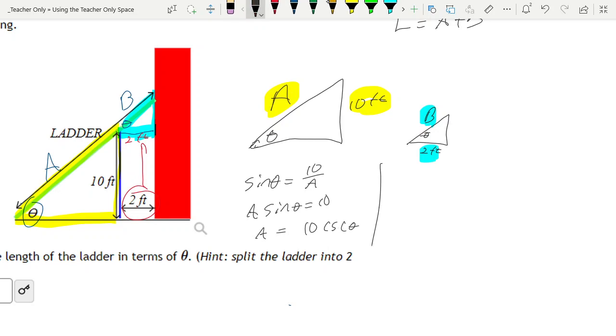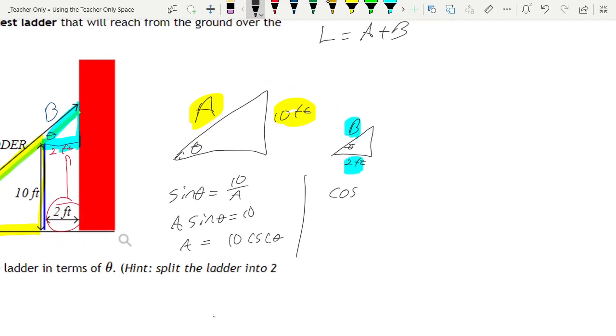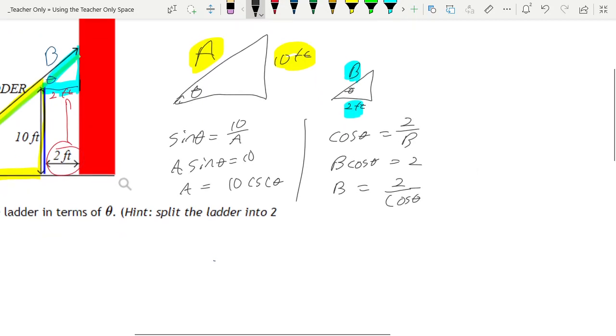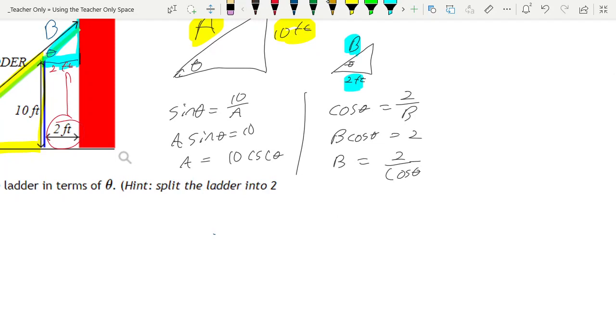Similar logic over here, but we don't have the opposite. We have the adjacent for the blue triangle. So we're going to go ahead and say that would be cosine. And so that would be adjacent over hypotenuse. And again, solving for B. We're going to divide both sides by cosine. So that's going to give me 2 over cosine theta. And once again, rewriting that, when we have 1 over cosine, that would be the same thing as secant theta.